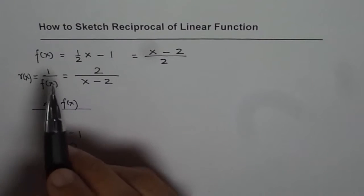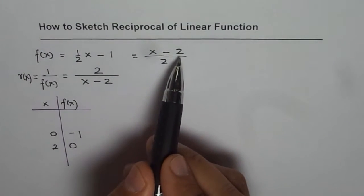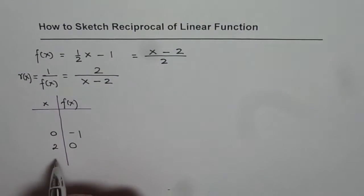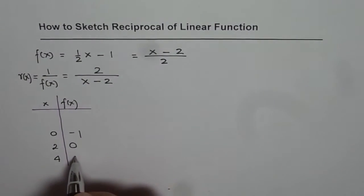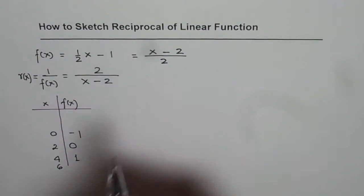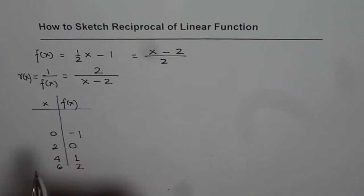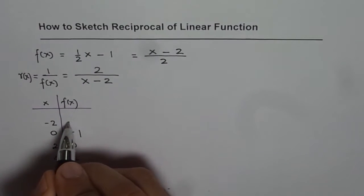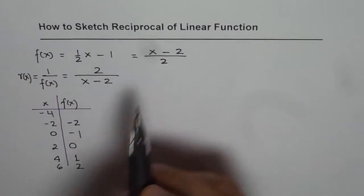We are also looking for a point where f of x is 1. At x equals 4: 4 minus 2 is 2, divided by 2 is 1. At x equals 6: 6 minus 2 is 4, divided by 2 is 2. So those are points on the right side. On the left side, at x equals minus 2: minus 4 divided by 2 is minus 2. At x equals minus 4: minus 6 divided by 2 is minus 3.